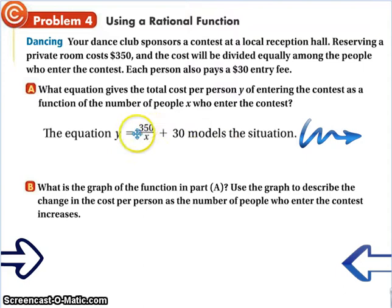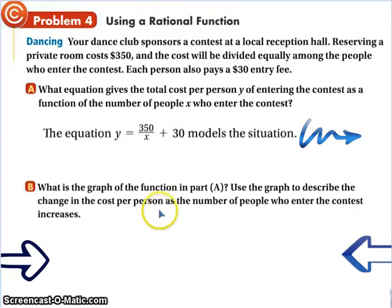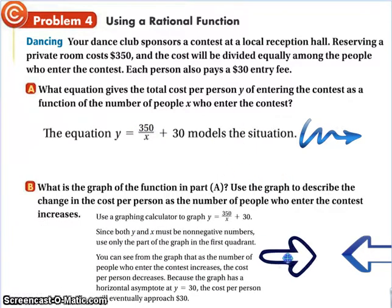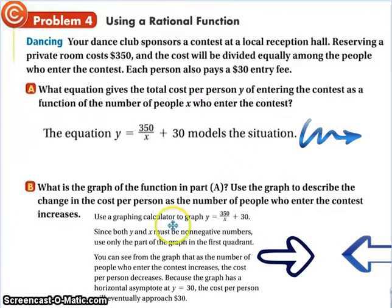$350 over X is how much each person pays. So, the more people, the less they pay. Plus the $30. And this is going to be the total cost per person. Now, we have to recognize one thing. That we can't have negative people. And they can't pay negative dollars. So, when we would normally have a graph in quadrant one and quadrant three. We have a real world situation where it's not possible to have negatives. So, therefore, we're going to have quadrant number one.